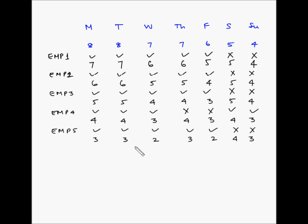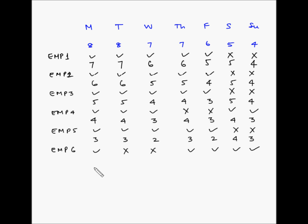Choosing arbitrarily, we'll select Tuesday and Wednesday. Employee number 6 will take Tuesday and Wednesday off and work on the remaining days. The net requirements now become: Monday 2, Tuesday 3, Wednesday 2, Thursday 2, Friday 1, Saturday 3, Sunday 2.